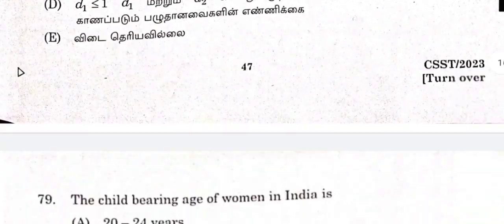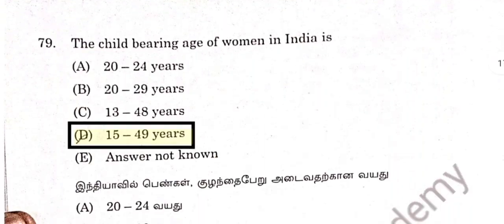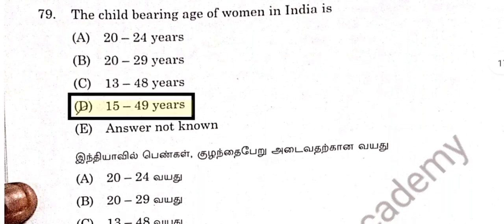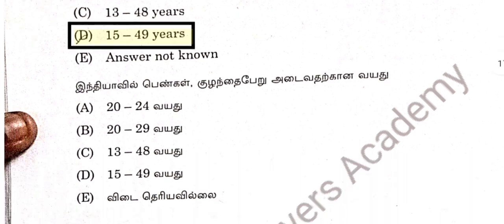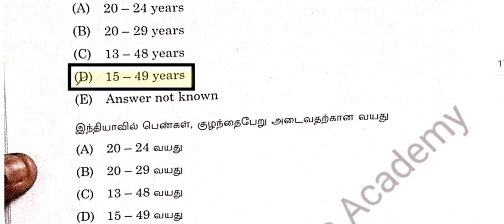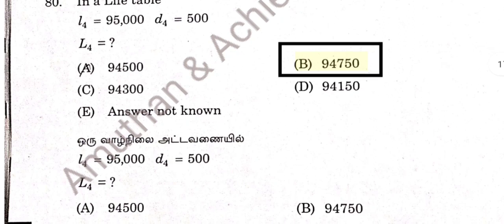Question 79: The childbearing age of a woman in India is 15 to 49. Option D is correct answer.